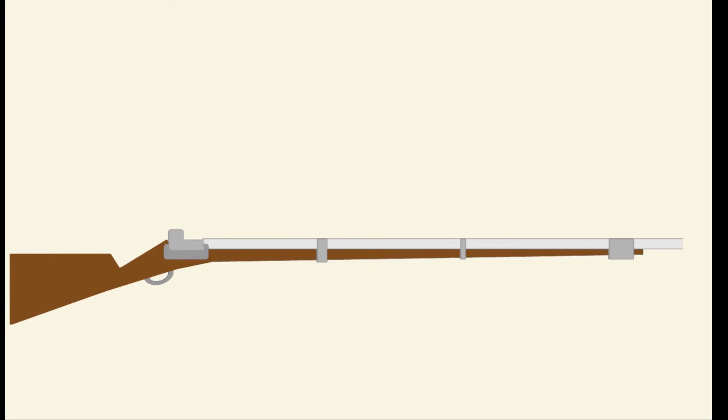In general, muskets were considered to be relatively inaccurate. The reason for that was mainly the fact that the musket ball was significantly smaller than the bore of the barrel.